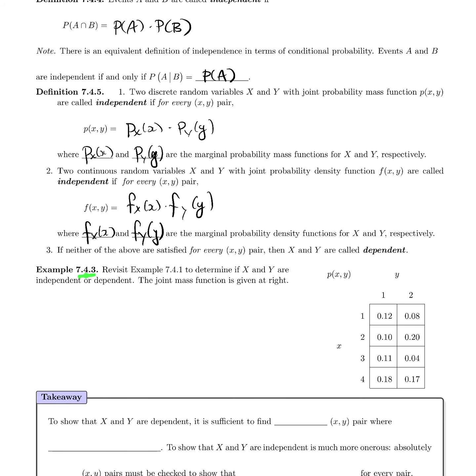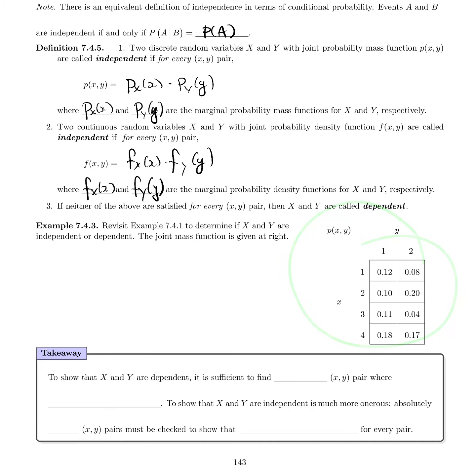Example 7.4.3, we're asked to revisit example 7.4.1 to determine if X and Y are dependent or independent. So the joint mass function is given here. So what we're going to do is start out by checking each (x,y) pair to see if this is true. And if we find one that fails to satisfy this relationship, well then the X,Y variables will be dependent. And if they all satisfy that relationship, then X and Y will be independent.